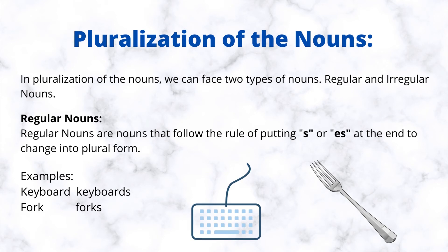Pluralization of the nouns. In pluralization of the nouns, we can face two types of nouns: regular and irregular nouns. Regular nouns are nouns that follow the rule of putting s or es at the end to change into plural form. Examples: keyboard, keyboards. Fork, forks.